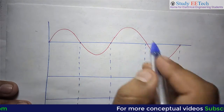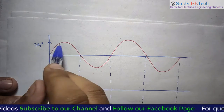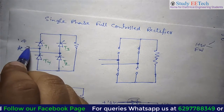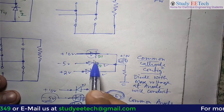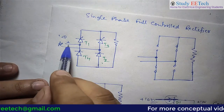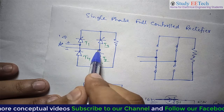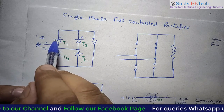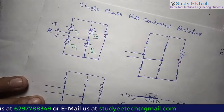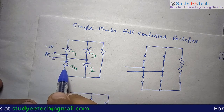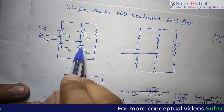We have taken the supply voltage shown in red color, this is Vs. In the positive half cycle, this is the common cathode configuration — that thyristor which has higher potential at its anode will conduct. So T1 will conduct because this is having higher potential. From the common anode configuration, that thyristor will be forward biased which is having the least potential at its cathode. So T2 will conduct. What we can see in the positive half cycle — T1 and T2 will conduct.